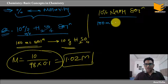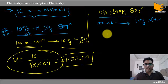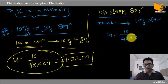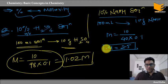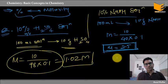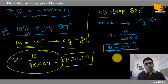Now converting molarity to percent weight by volume: given 0.1 molar NaOH solution. This is a bit tricky but manageable. The approach: 0.1 molar means 0.1 moles in 1 liter of solution. Convert moles to mass: 0.1 × 40 = 4 grams of NaOH. Volume of solution is 1000 ml. Percent w/v = (4 / 1000) × 100 = 0.4% weight by volume.